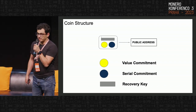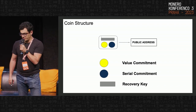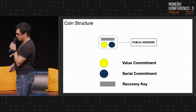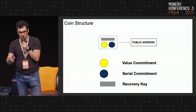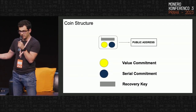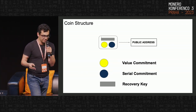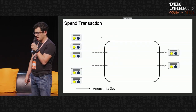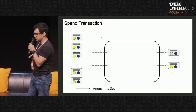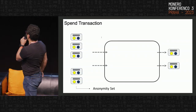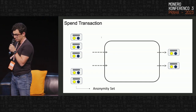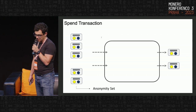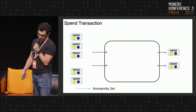Coins can be created by mint and spend transactions. Mint is used to transfer base-layer coins to the shielded layer and also shield new supply generated by coinbase transactions. The spend transaction is the one which can consume previously minted coins and generate new coins. Let's go into some details of this transaction algorithm.